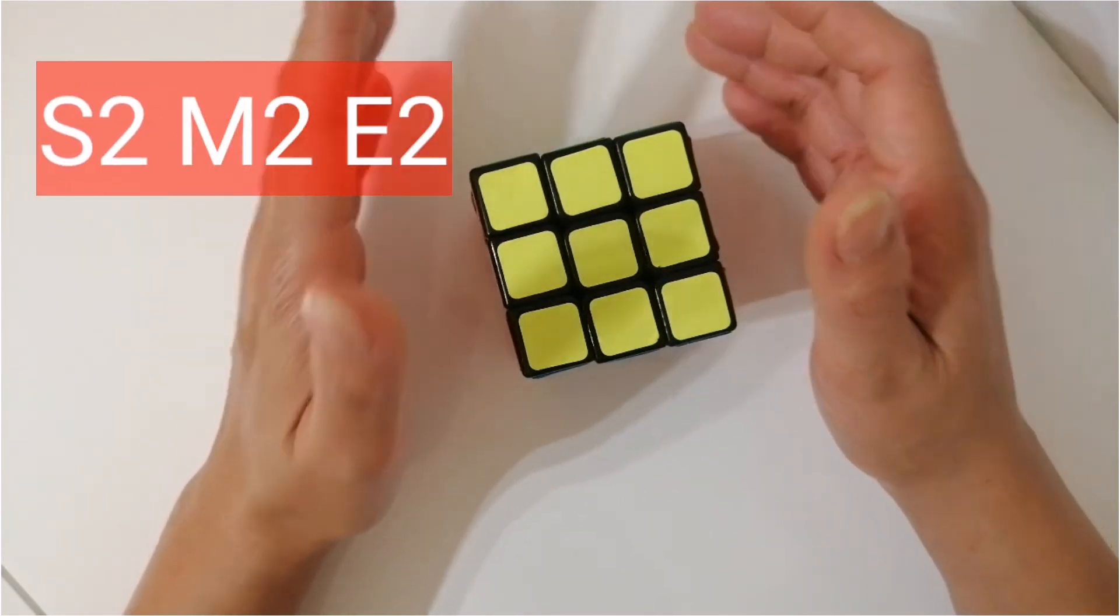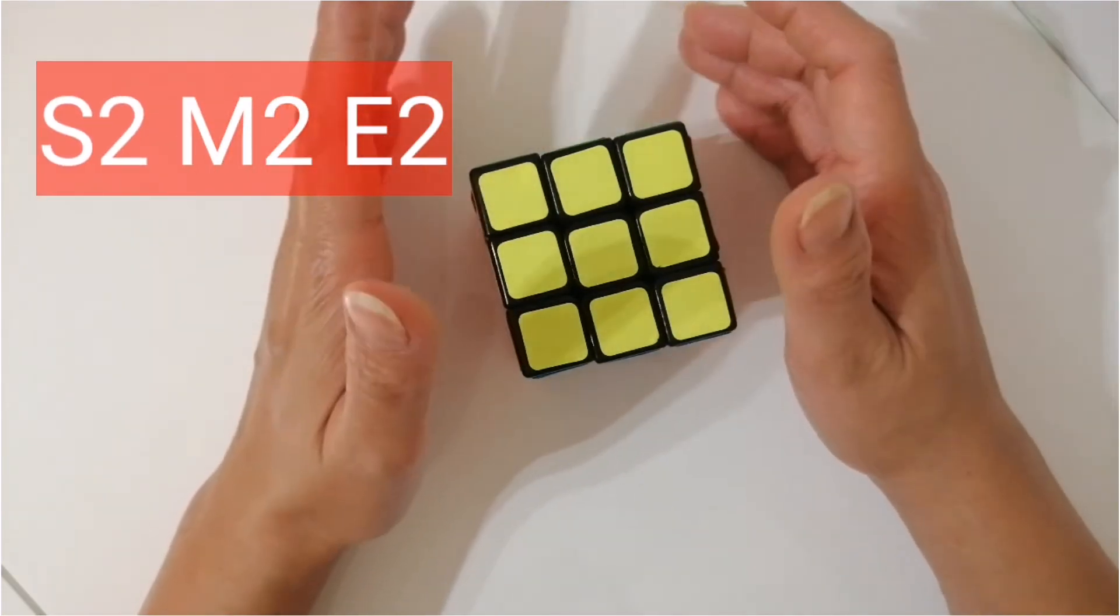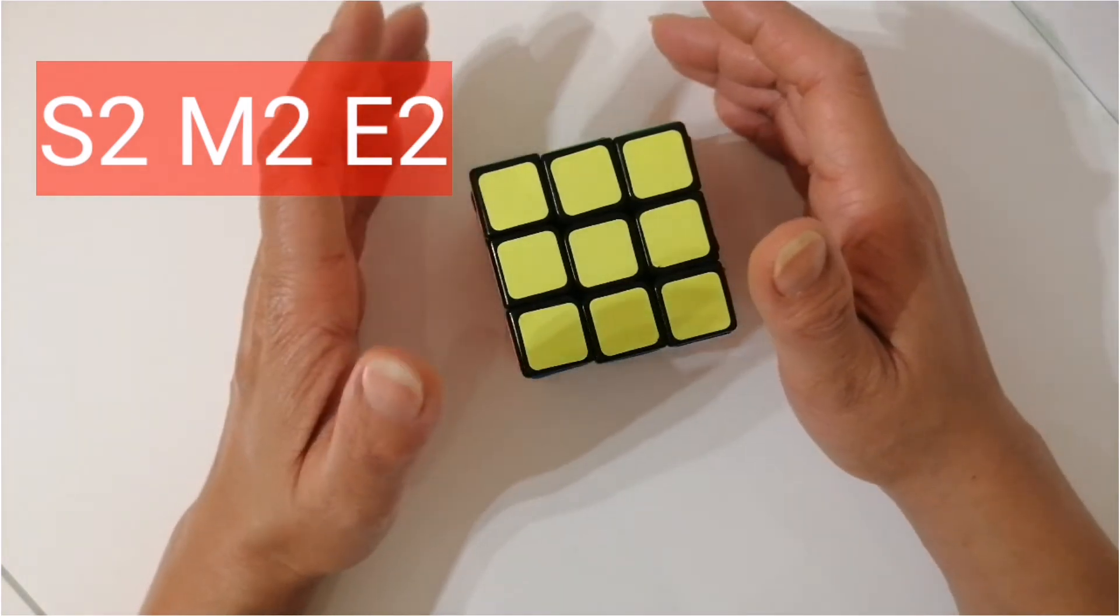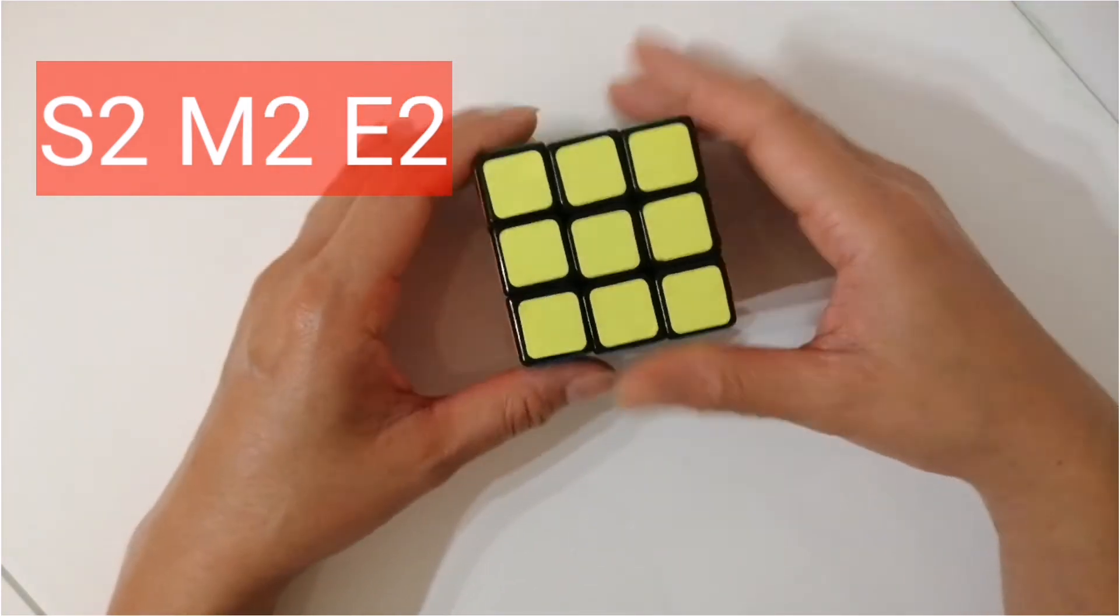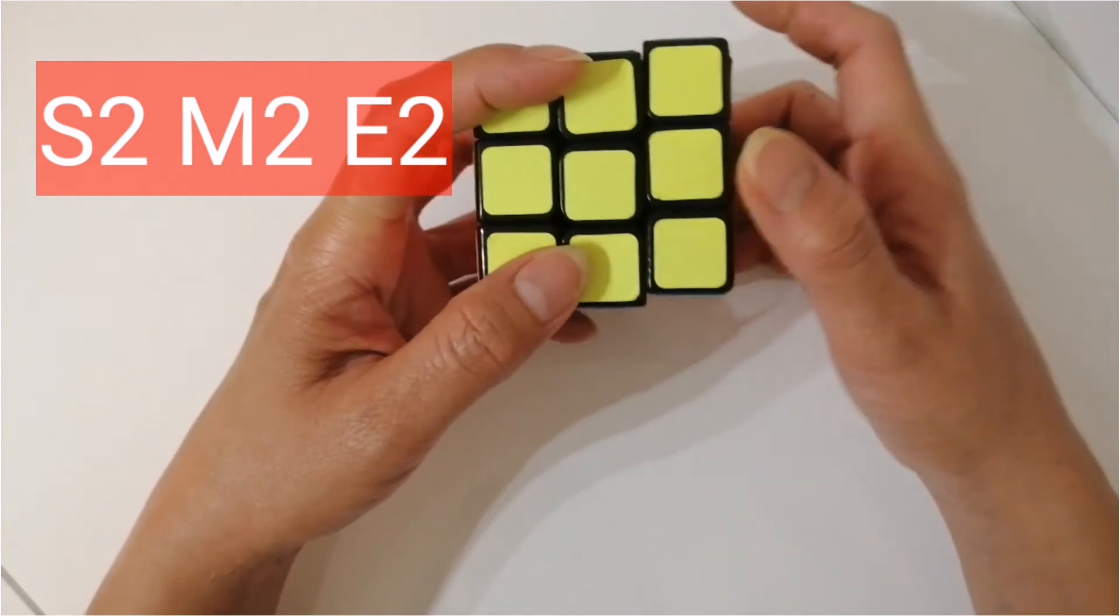We're just adding one algorithm to make the pattern, the checkerboard pattern. So S2 M2 E2.